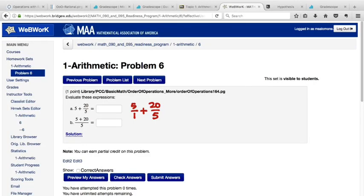To add 5 plus 20 over 5, one of the ways to do it is to turn the whole number into a fraction by using a denominator of 1 right here. And then the question is, how do you add two fractions?